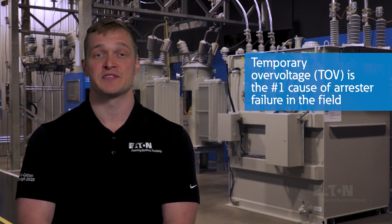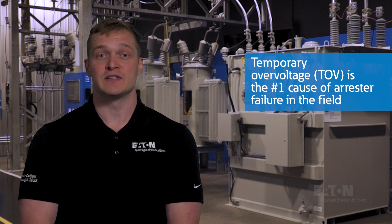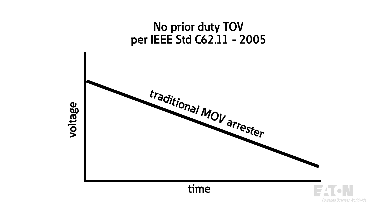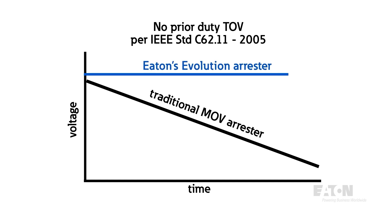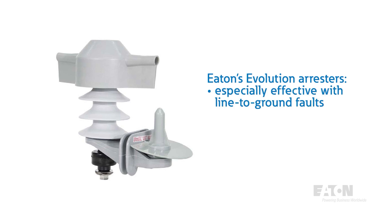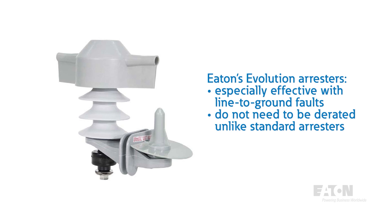Temporary overvoltage, or TOV, is also critical to performance, because it's the number one cause of arrestor failure in the field. TOV can be described as the strength of the arrestor, or how much overvoltage it can handle. Typically, this capability decreases as the time duration of the surge increases. But Eaton's Evolution Arrestor is the only type of its kind in the industry where surge duration doesn't affect the TOV capability. This is especially important in single-phase line-to-ground faults, which cause a voltage rise on unfaulted phases. This continuous overvoltage will cause standard arrestors to fail, so arrestors usually need to be derated to account for these faults. However, by having a duration-independent TOV rating, the Evolution Arrestor eliminates the need to derate and gives utilities the ability to use smaller kV sizes.